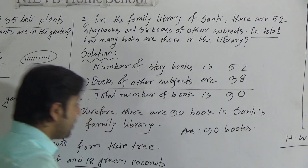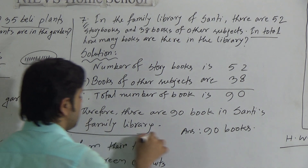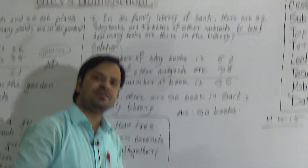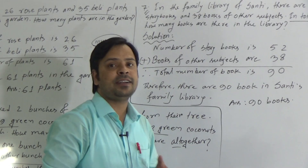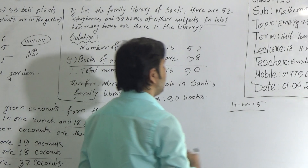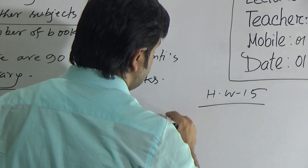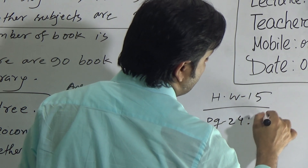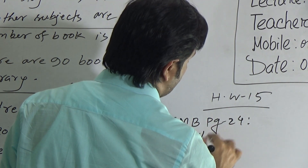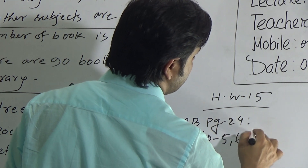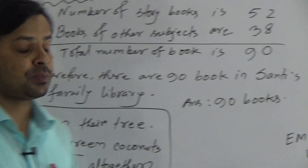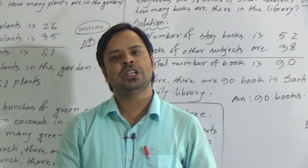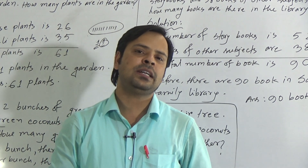I hope you have understood the solution of word problem 7 also. So I have done 3 word problems today: 5, 6, and 7. Follow our today's class and do this as your homework. Homework is EMB page 24, word problem 5, 6, 7 — these 3 questions. Do your homework properly and submit on next Saturday. Keep practicing at home. Abide by your parents. Stay home, stay safe. See you again. Assalamu alaikum.